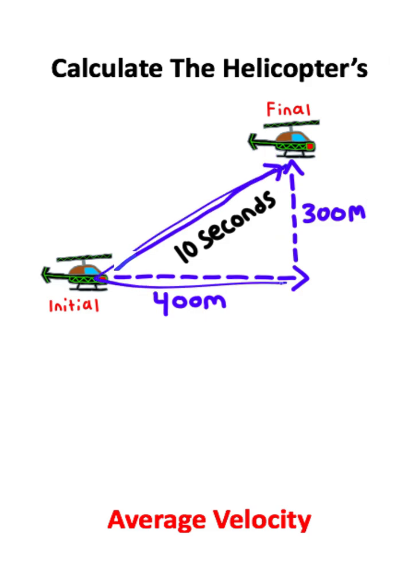We have a right triangle which forms. This is a common right triangle known as a 3, 4, 5 right triangle. Since we have 300 and 400, that means we must have a 500 meter displacement between the initial and final position of this helicopter.